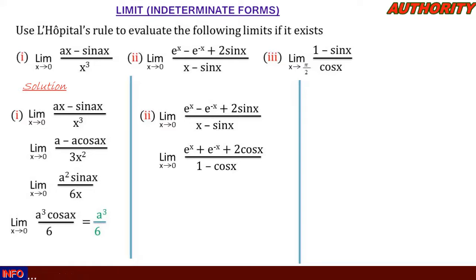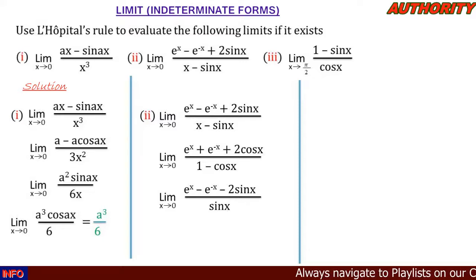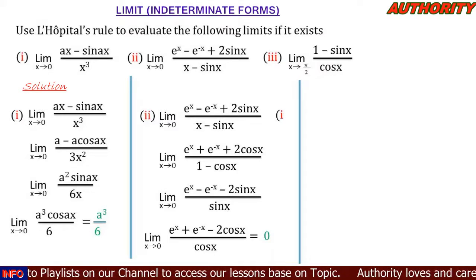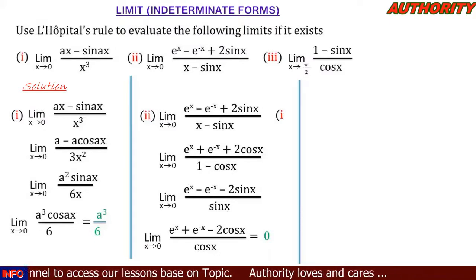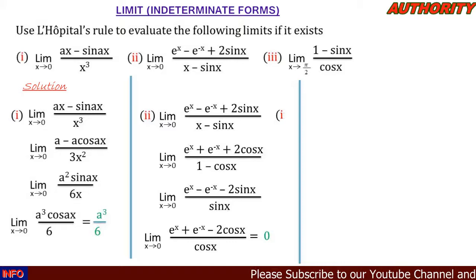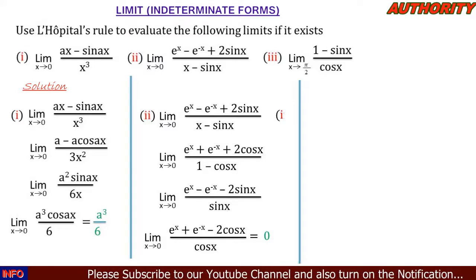That means we differentiate again. We get lim as x approaches zero of (eˣ - e⁻ˣ - 2sin(x)) / sin(x). Plugging in zero still gives us 0/0, so we differentiate once more. We get lim as x approaches zero of (eˣ + e⁻ˣ - 2cos(x)) / cos(x). Plugging in zero: the numerator gives 1 + 1 - 2 = 0, and the denominator gives 1, so we get 0/1 = 0.